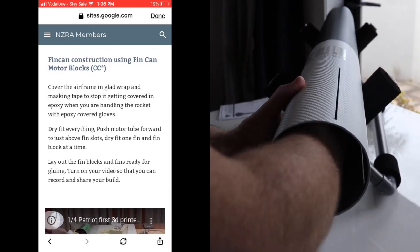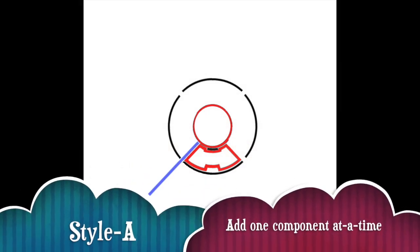What we need to do first is a dry fit to make sure that we know the procedure. Once you're comfortable with dry fitting all the parts, you need to decide which style you're going to adopt.